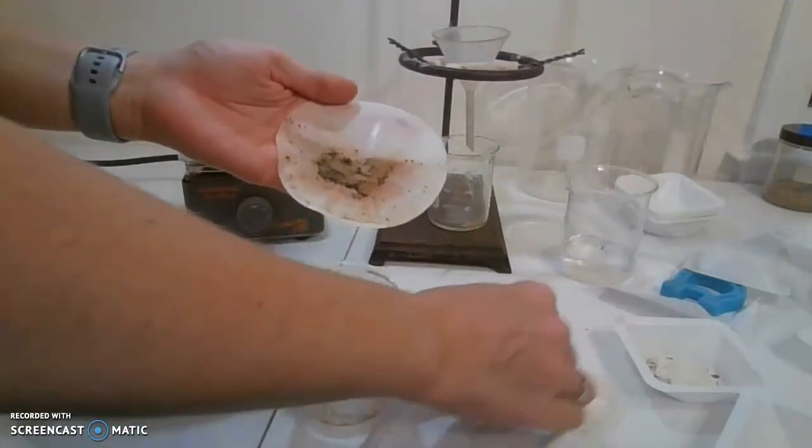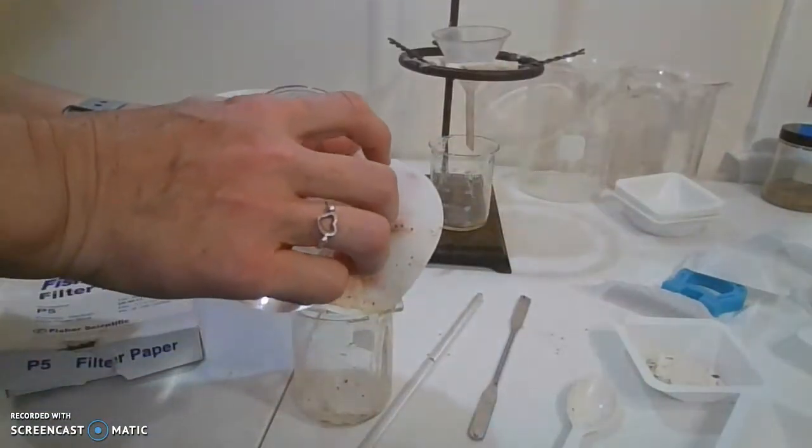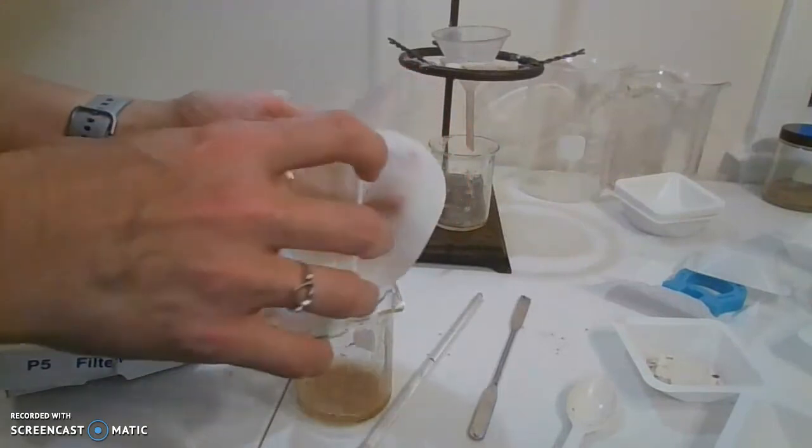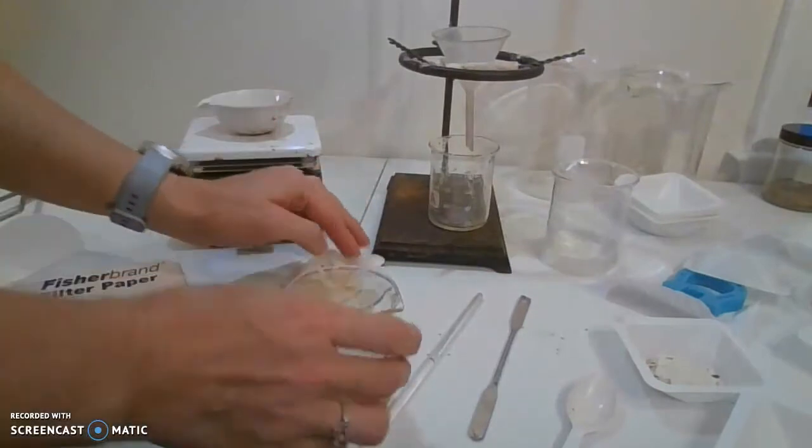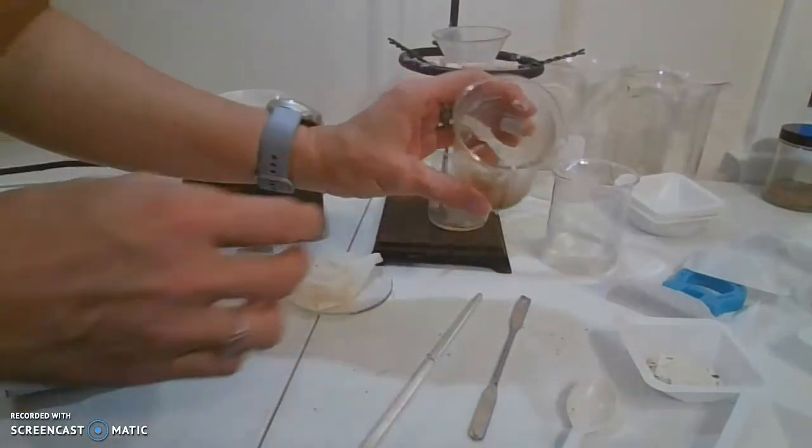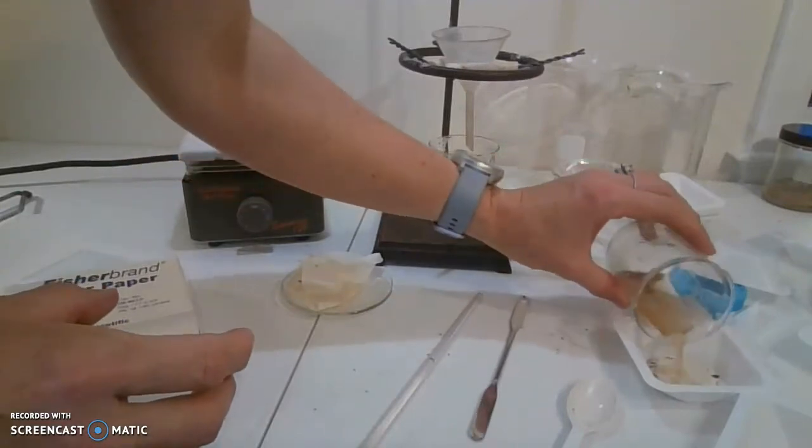So what we can do is put some water back in since we didn't get all the poppy seeds out the first time. And then what we can do is swirl it around and pour off the water with the poppy seeds.